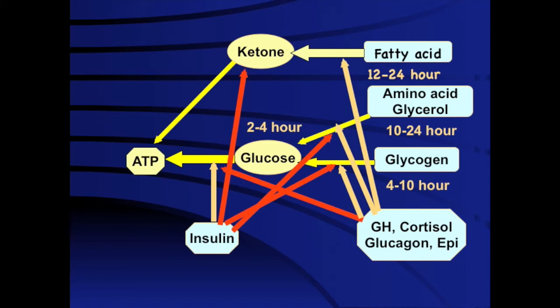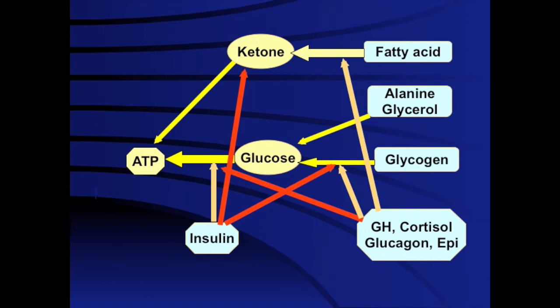Since there are four counter-regulatory hormones, hypoglycemia will not happen with a solitary deficiency. Unless you have a combined counter-regulatory deficiency, it is unlikely to develop hypoglycemia. An individual with isolated growth hormone deficiency will very rarely present with hypoglycemia. Cortisol deficiency as in congenital adrenal hyperplasia may present with hypoglycemia if the child is stressed or in shock. But if you have a combination — such as growth hormone and cortisol deficiency in a hypopituitary child — they will develop hypoglycemia very early.